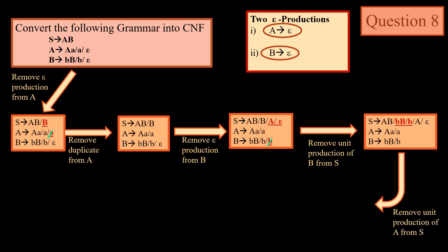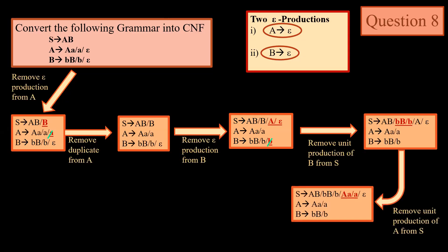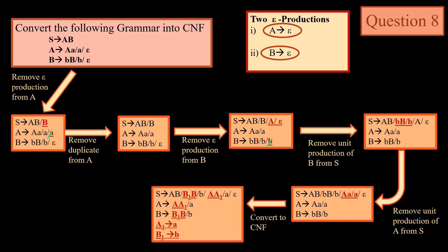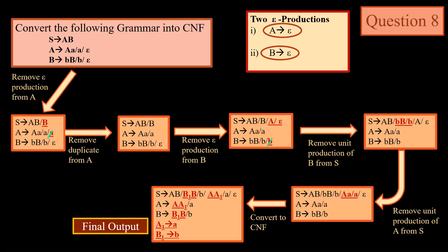Now we remove the unit production of A from S. We replace the right side of capital A with the production in S. Now we convert this into Chomsky Normal Form. We introduce two new productions: A1 → a and B1 → b. This is the final output we generate. We can see that we have S → ε since S is the start state, and we can always have epsilon in the start state.